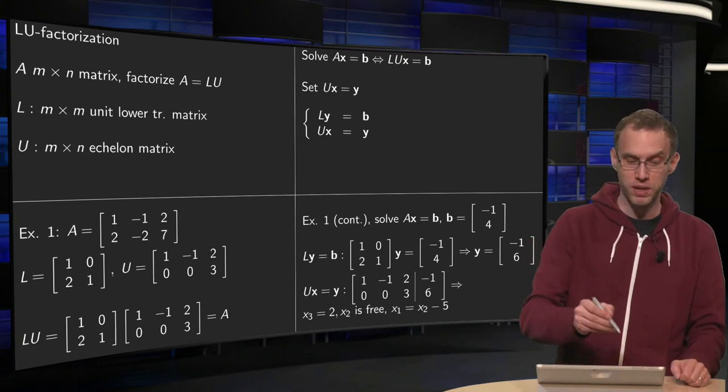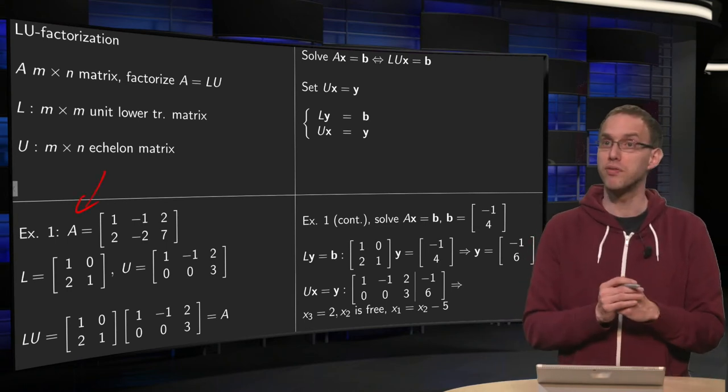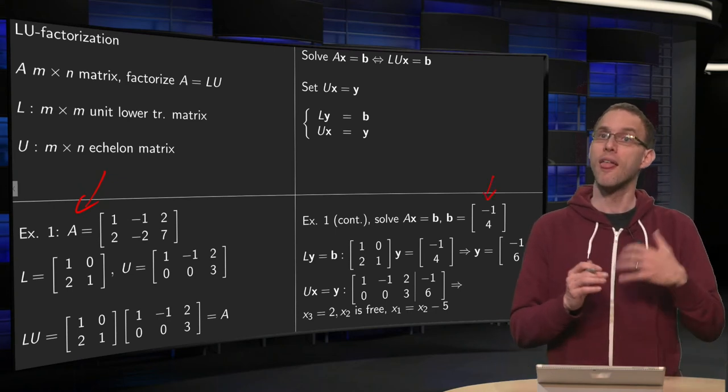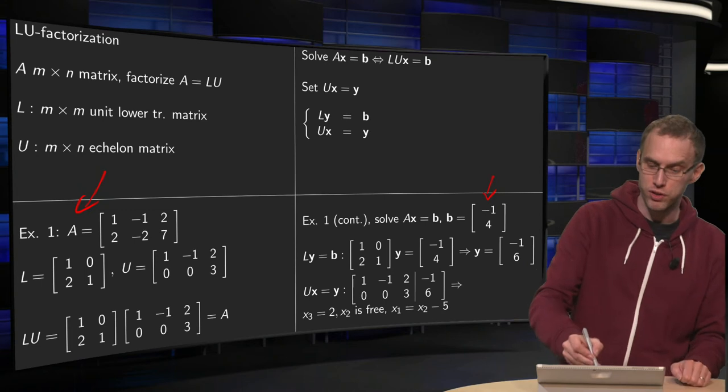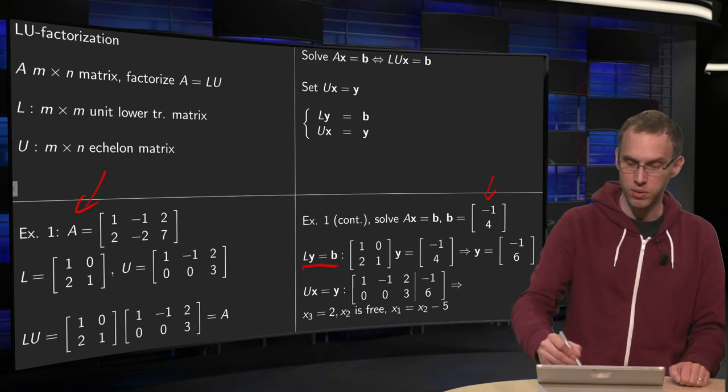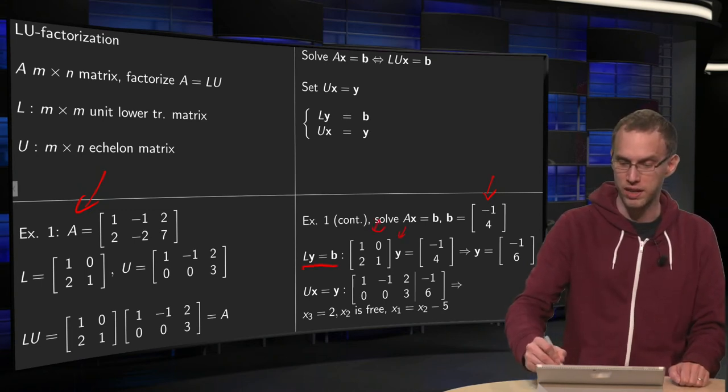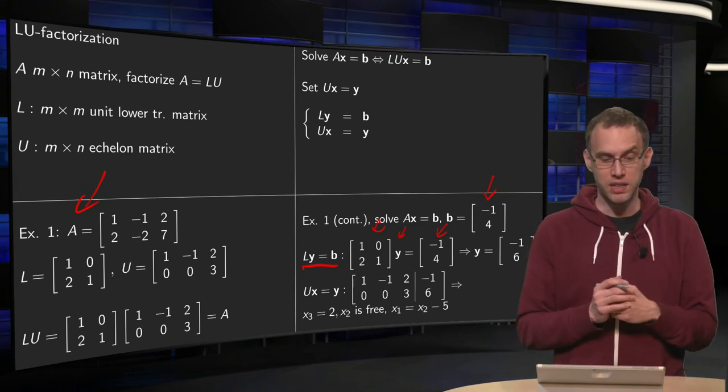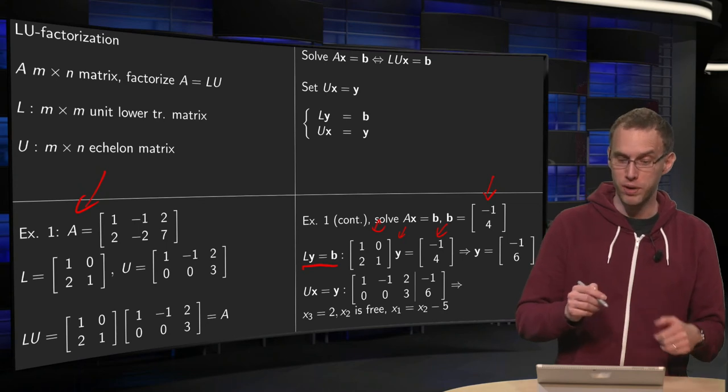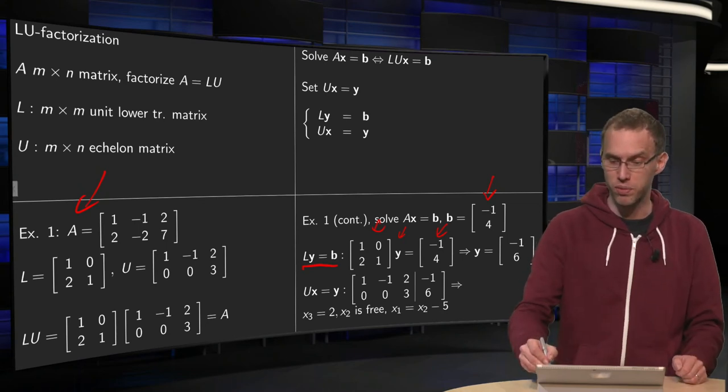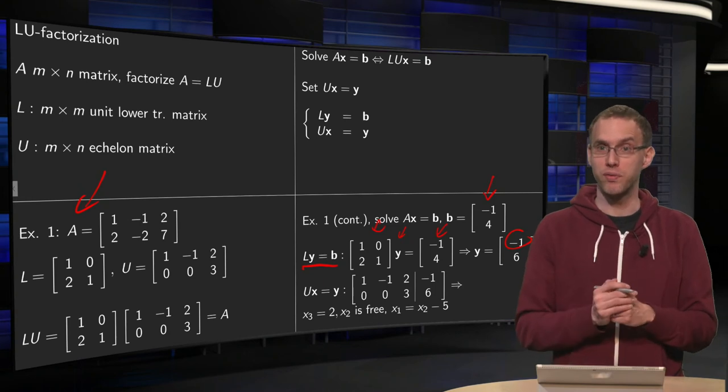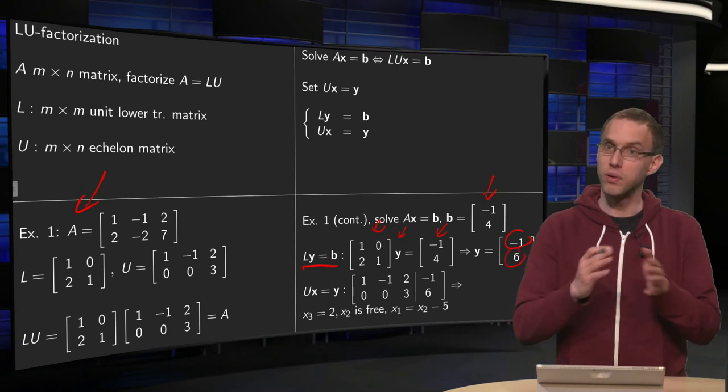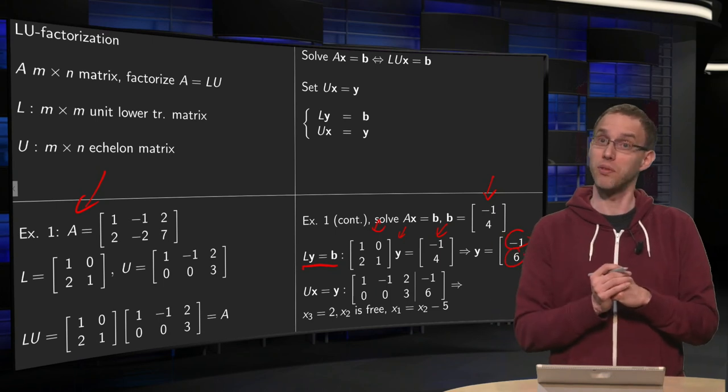So we want to solve Ax equals b with this matrix A from the first example. We just continue with some vector b, minus 1, 4. Now how does it work? First we solve Ly equals b. So here is your L, and here is your y, and there is your b. And due to your lower triangular form we can immediately compute first the y1. 1 times y1 equals minus 1, so y1 equals minus 1. And then 2y1 plus 1y2 equals 4, so y2 equals 6. So you can immediately write down what your y is.